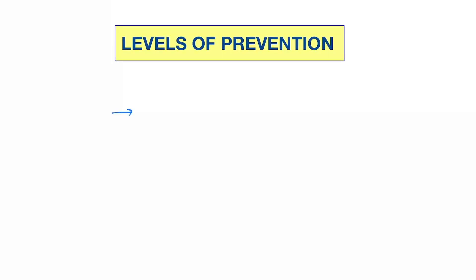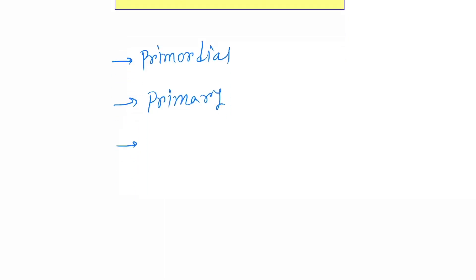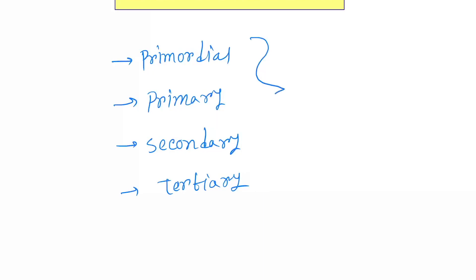Hello friends, today our topic is the levels of prevention. There are four levels: the first one is primordial prevention, the next one is primary prevention, then secondary prevention, and tertiary prevention. Now let's understand these four with examples.